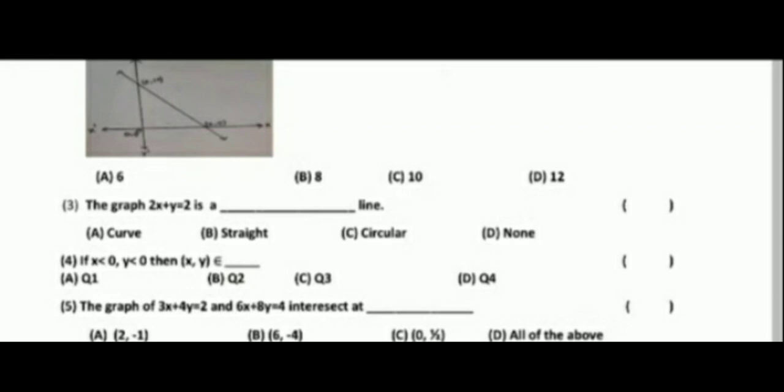The graph of 3x plus 4y equal to 2 and 6x plus 8y equal to 4 intersected. Here, use the two equations to find x and y values.